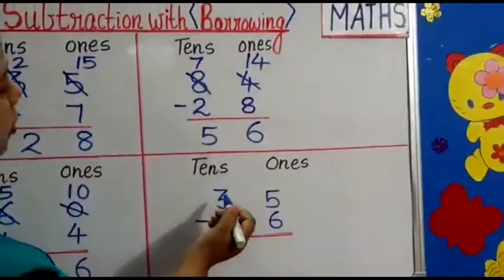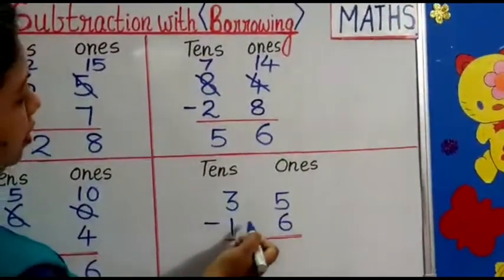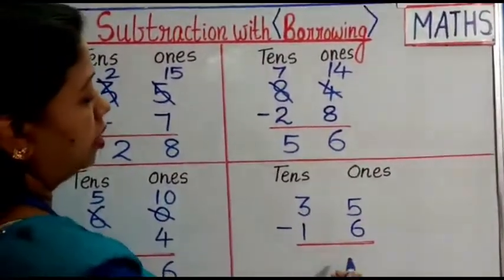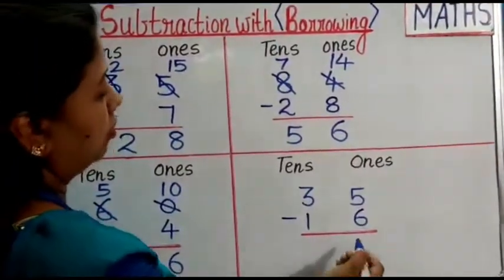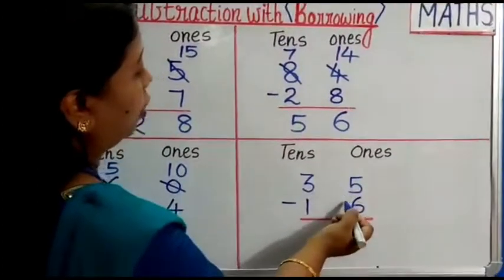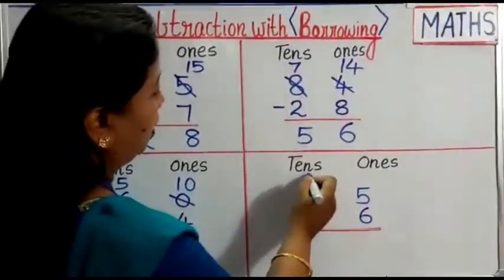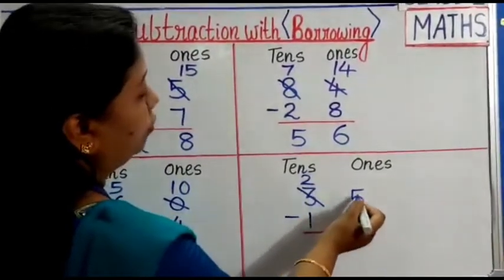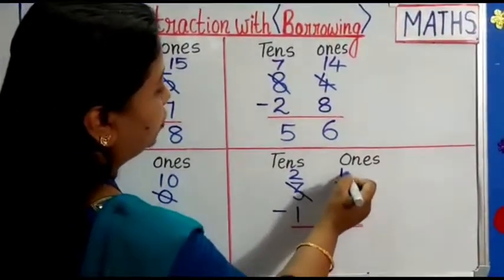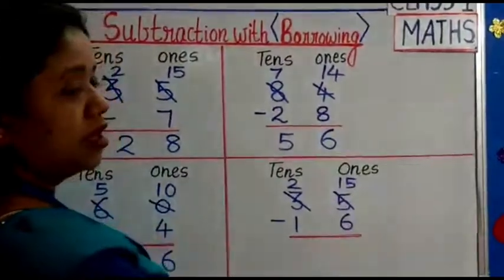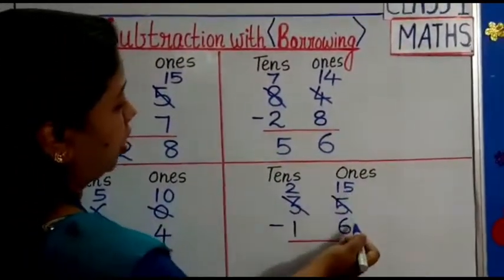Fourth one. 35 minus 16. Again 5 is a smaller number, 6 is a bigger number. So we will borrow 1 tenths from 3. 3 becomes 2, 5 becomes 15. 15 is a bigger number, 6 is a smaller number.